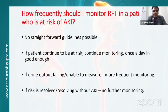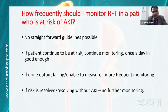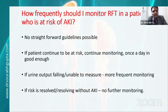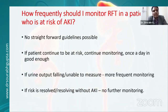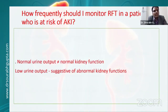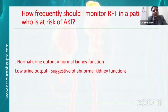Regarding how frequently to monitor a patient at risk of AKI: there is no straightforward guideline, but if the patient continues to be at risk, one can monitor at least once a day. If the patient has good urine output and has responded to management, further monitoring may be stopped. If the patient is worsening or urine output is unmeasurable, more frequent monitoring is required. Remember: normal urine output does not mean normal kidney function, especially in neonates where the most common AKI is non-oliguric. Low urine output does indicate abnormality and needs evaluation.